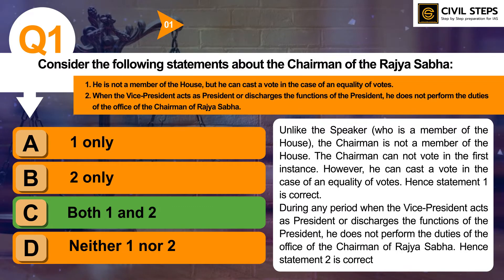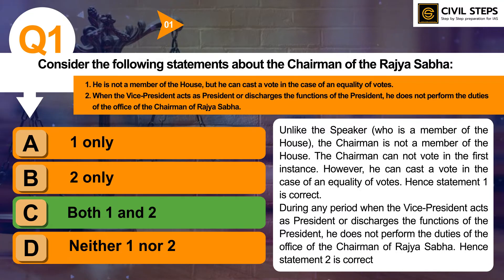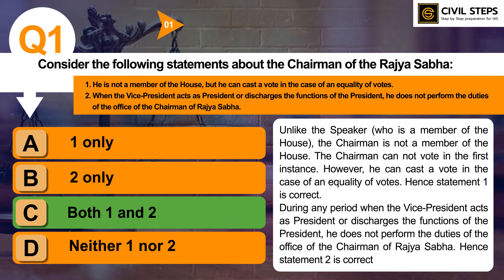The topic of Parliament is very important from the UPSC Prelims exam point of view, especially the topic of Speaker. You should also have knowledge about the Chairman of Rajya Sabha and what is the difference between the powers of the Speaker of Lok Sabha and Chairman of Rajya Sabha, so you can prepare this topic holistically.